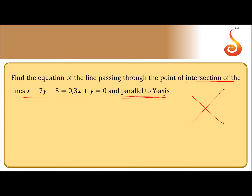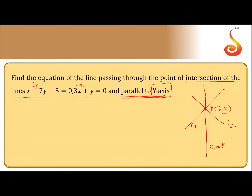Let P be the point of intersection of the two given lines, with coordinates (h, k). Let l1 and l2 denote the two given lines. Solving l1 and l2 gives the point of intersection. The line passing through that intersection and parallel to the y-axis will be of the form x equals constant, that is x equals k.